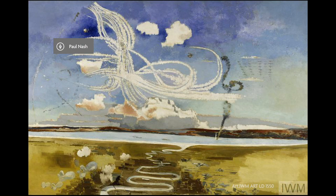The scene includes certain elements constant during the Battle of Britain: the river winding from the town areas across to parched country, down to the sea, beyond the shores of the continent. Above, the mounting cumulus concentrating at sunset after a hot, brilliant day. Across the spaces of sky, trails of aeroplanes, smoke tracks of dead or damaged machines falling, floating clouds, parachutes, balloons.